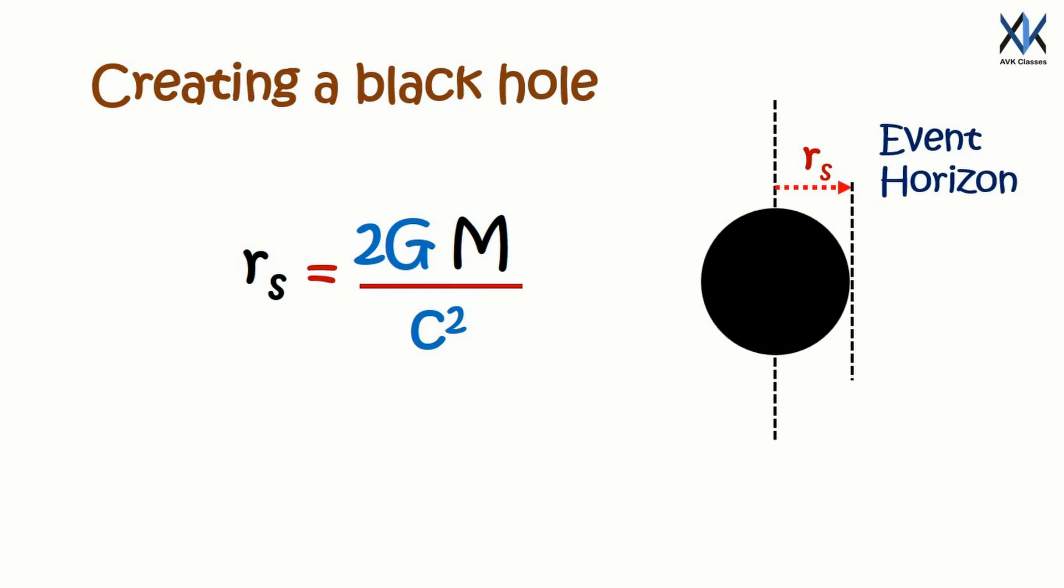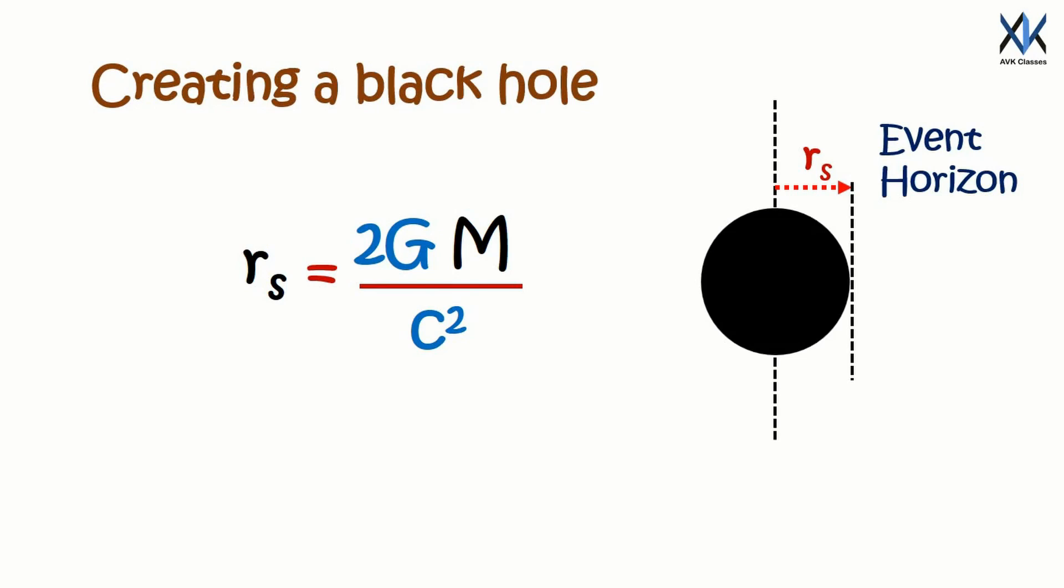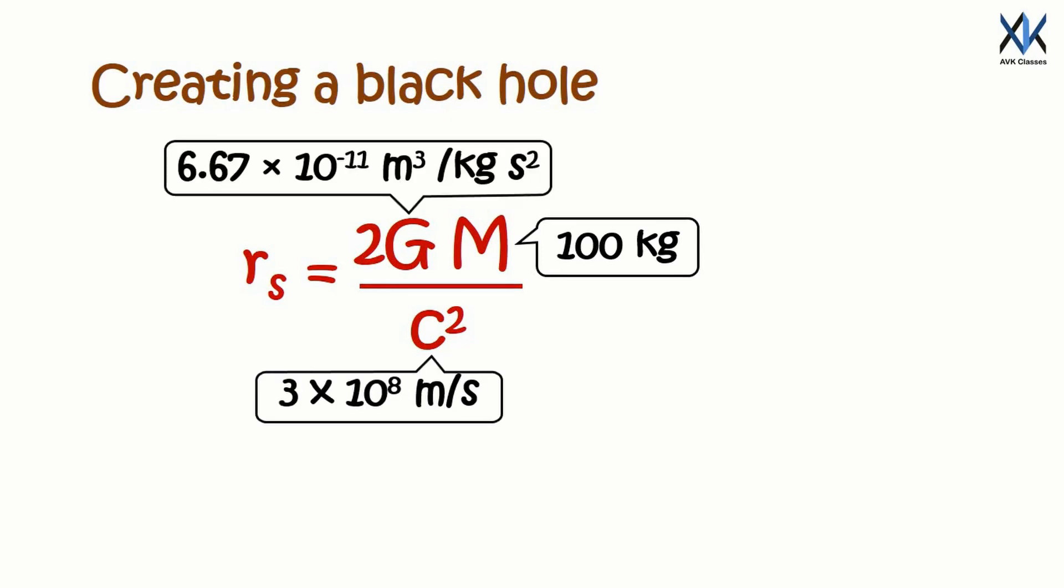Now you can use the Schwarzschild radius equation to find Schwarzschild radius of day-to-day objects. For example, you wish to convert an object having mass 100 kg to a black hole. All you need to plug in the values and you'll get the Schwarzschild radius.